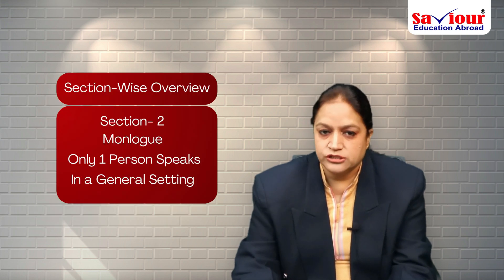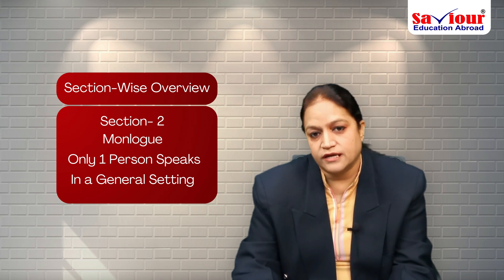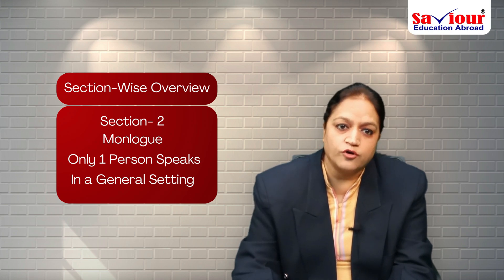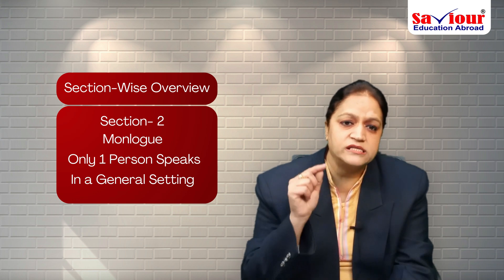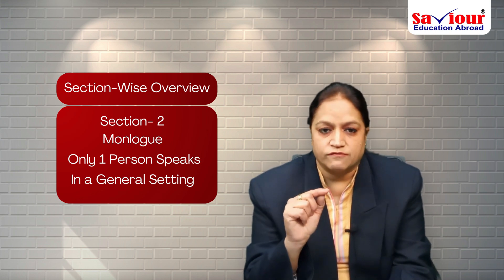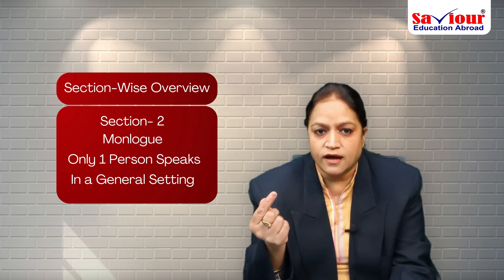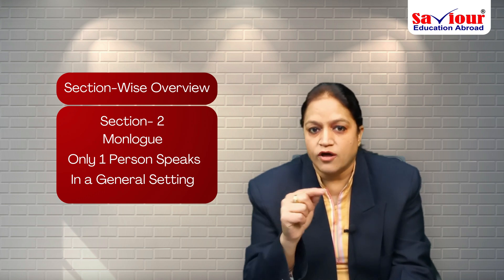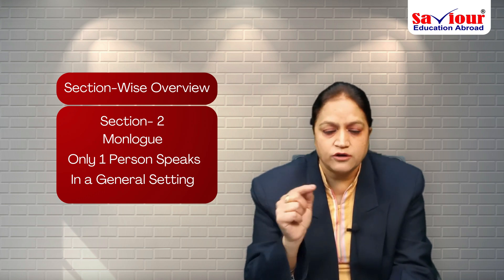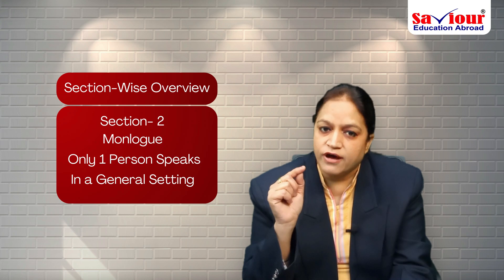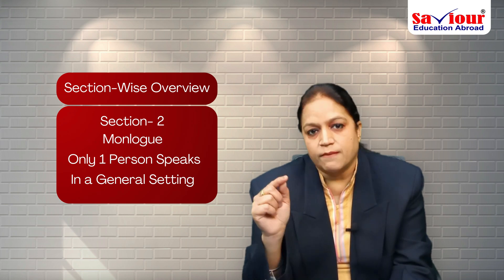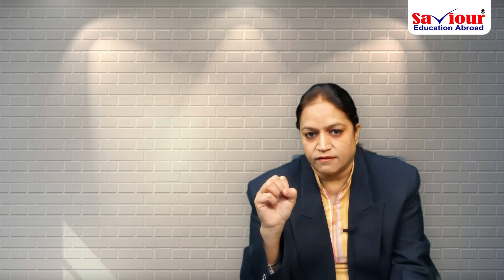Coming on to section 2. Section 2 is a monologue in a relatable setting. Monologue means only one person speaks. As we saw in section 1, there were 2 persons speaking — a conversation between 2 people. But here, only one person will be speaking. For example, a tour guide is explaining about a tourist attraction.